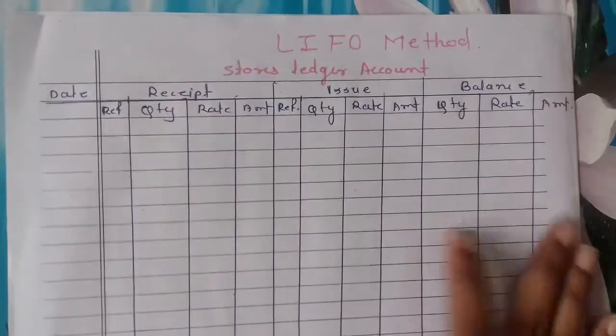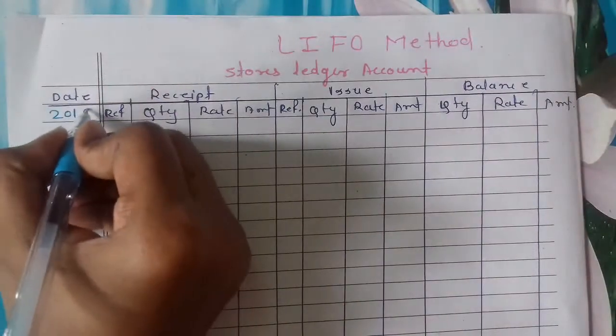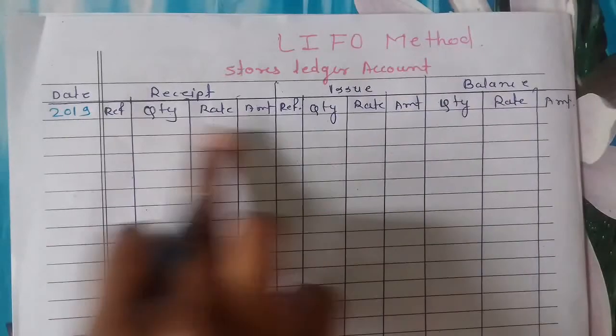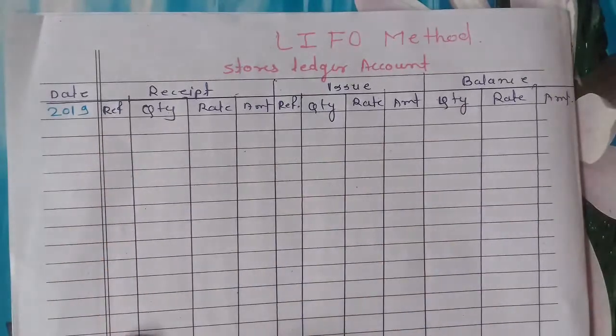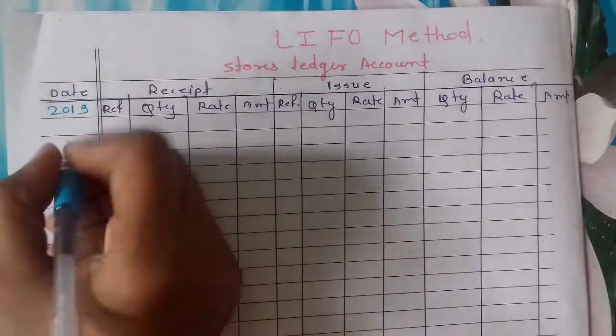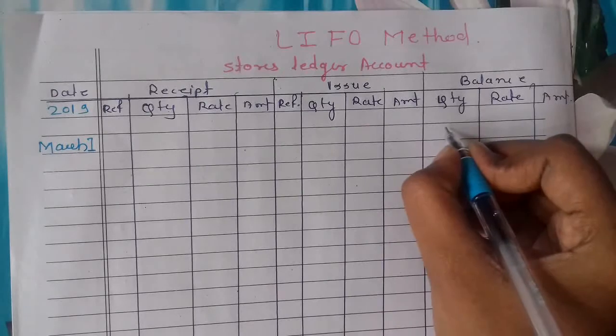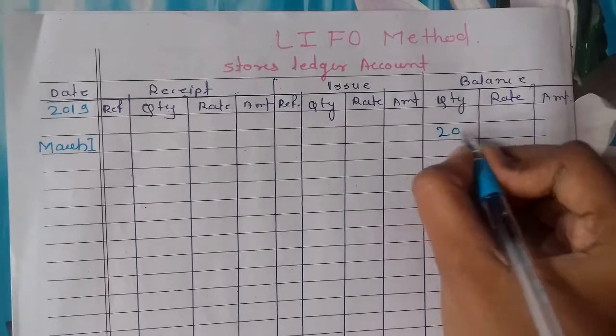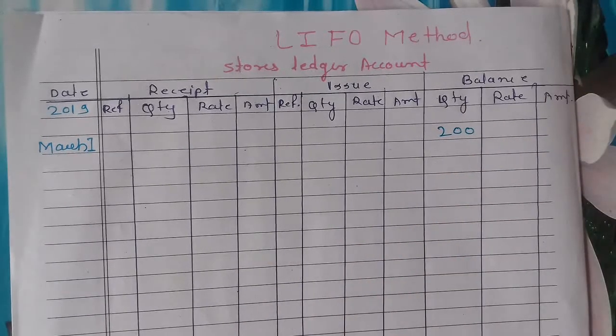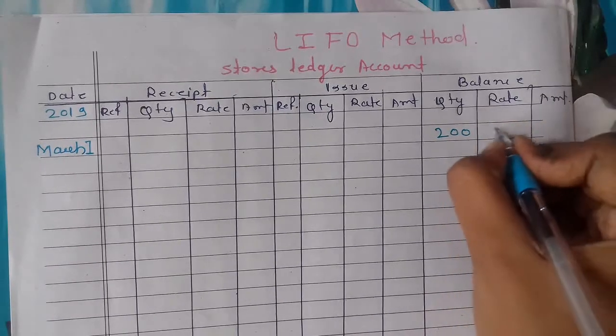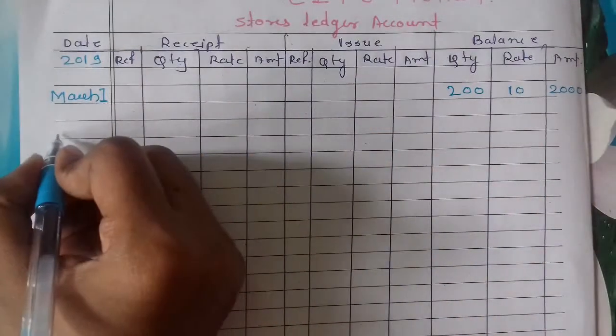See, here is your format. 2019 format with reference, quantity, rate, and amount columns. Don't worry about the reference number column. March first - opening balance. We did this problem in FIFO method, here we'll do it directly. 200 units at rate 10, amount 2000.